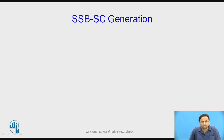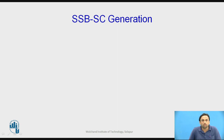In the previous lecture, we studied the filter method to generate an SSB signal. In SSB, we suppress the carrier signal as well as one of its sidebands, because the LSB and USB contain only the same information. One more method for SSB generation is the phase shift method.